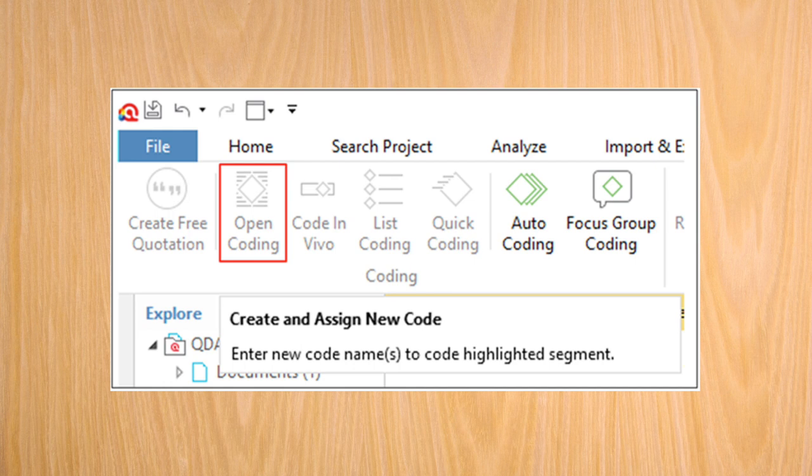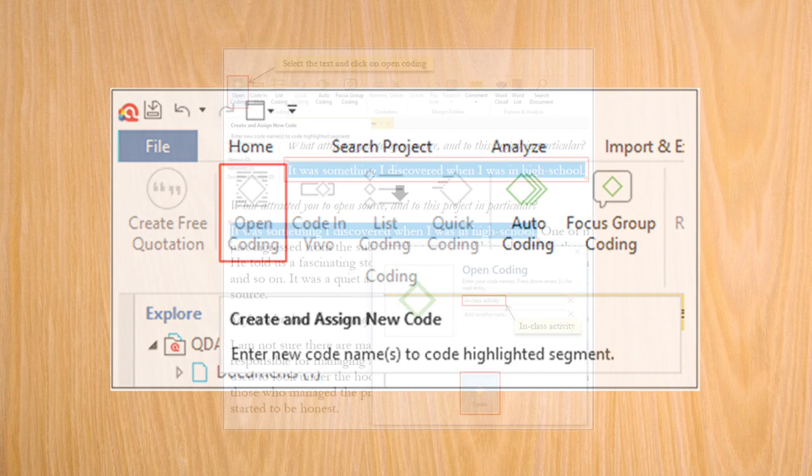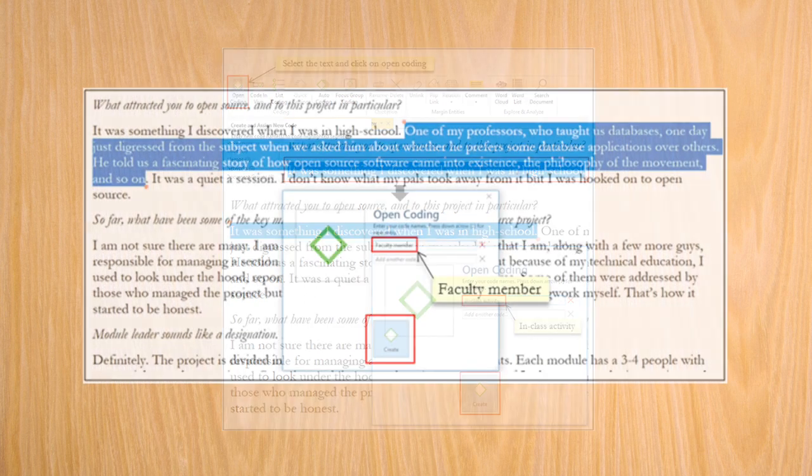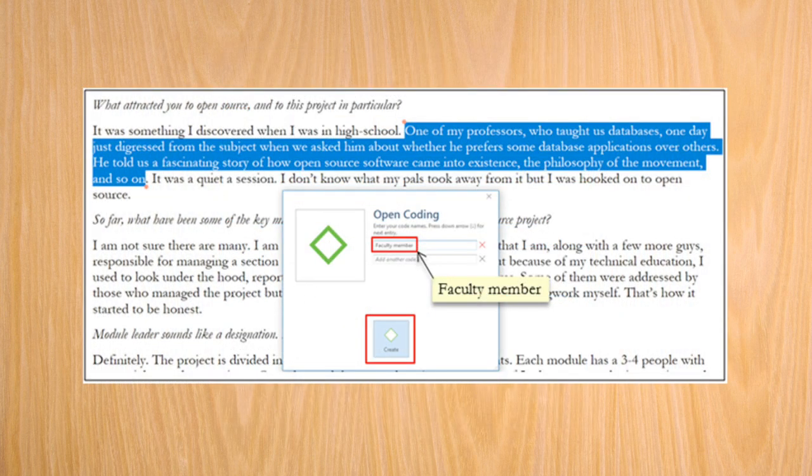After getting an overall understanding of the content in the text document, we are going to proceed with the coding. The first step is open coding. Simply put, open coding attaches labels or short names to snippets of text. For instance, in response to the first question, the respondent talks about how they got introduced to open source software during an in-class activity. I am going to select this snippet of text and code it as in-class activity. In the same answer, the respondent is talking about the specific faculty who introduced them to the concept of open source. I am going to select this portion of the response and code it as faculty member.